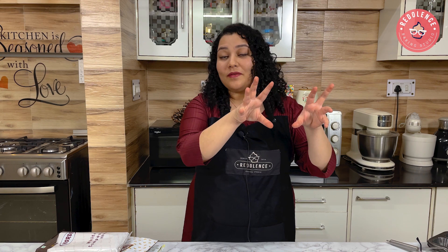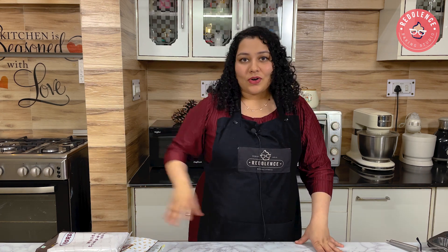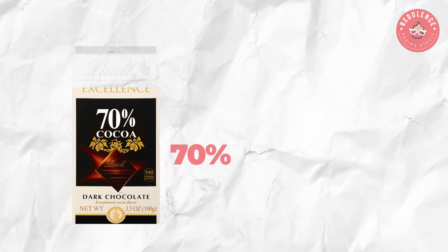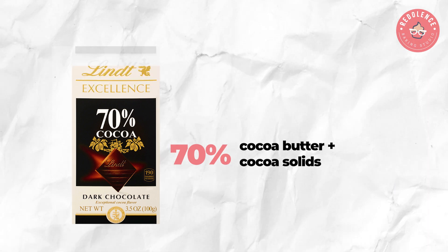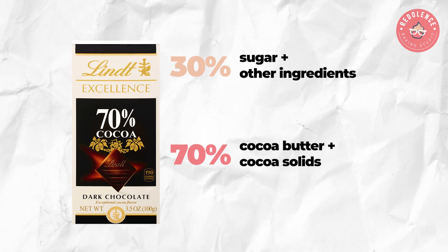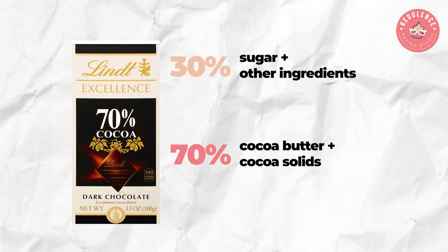When we talk about a chocolate bar, it contains the cocoa solids, the cocoa butter which is the fat, and the rest is sugar. How much sugar there is versus how much cocoa determines the percentage of the chocolate. For example, if you are eating 70% dark chocolate, that means out of 100 grams, 70% is cocoa butter plus cocoa solids, and the remaining 30% is sugar, emulsifiers, vanilla extract, and things like that.